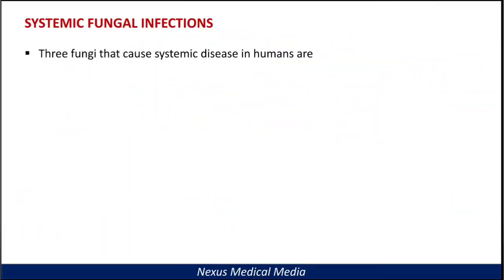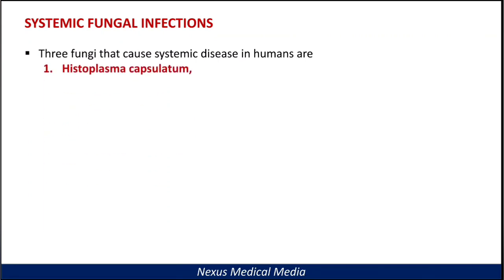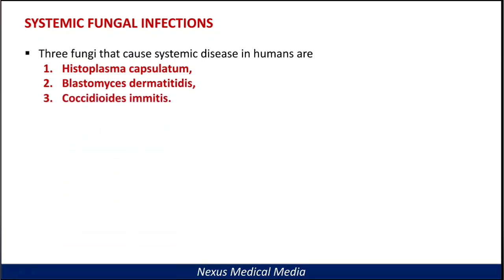Three fungi that cause systemic disease in humans are Histoplasma capsulatum, Blastomyces dermatitidis, and Coccidioides immitis. The list is long, but I'm going to talk about these three because they are very important and you can't afford to miss them.